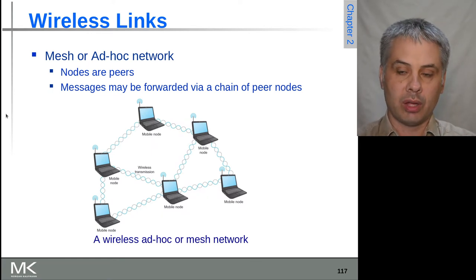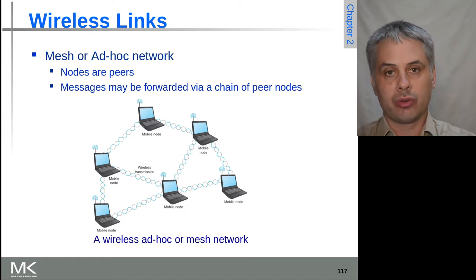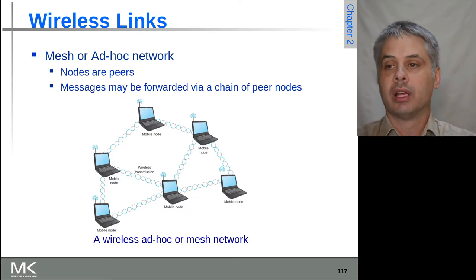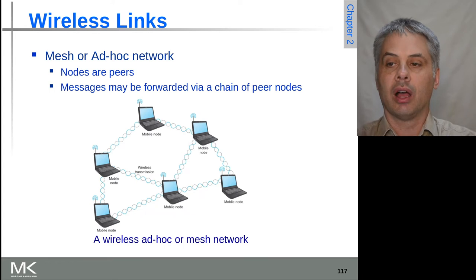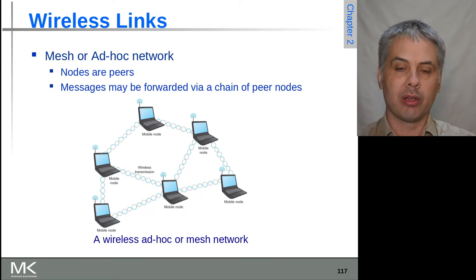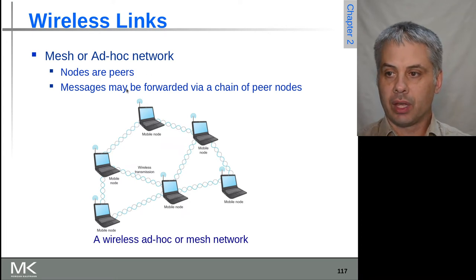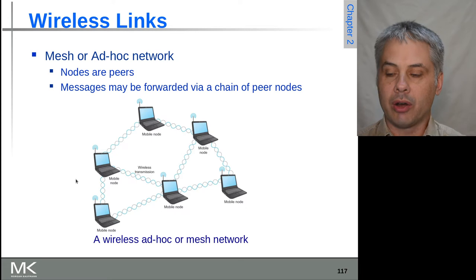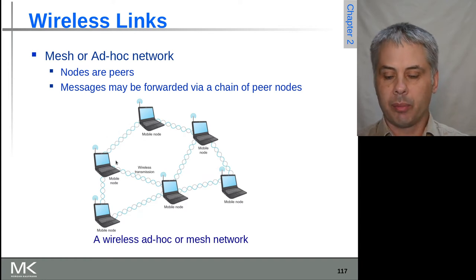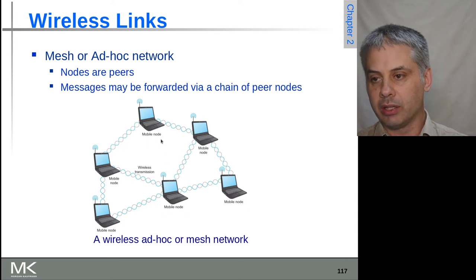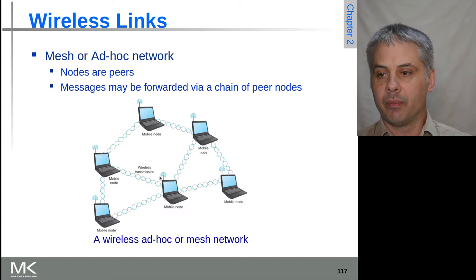Mesh and ad hoc networking use the broadcast point-to-multipoint nature of radio transmissions. Technically, a mesh is where every node can connect to every other node simultaneously, but the term is now commonly used to mean an ad hoc wireless network without full connectivity — where not every node is directly connected to every other. Looking at the diagram, this is not a true mesh but an ad hoc wireless network, since the top node has no direct connection to the three bottom nodes.